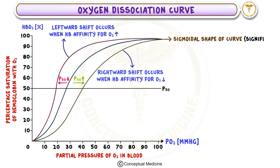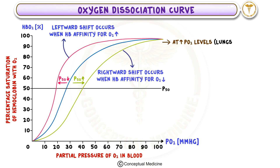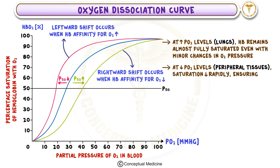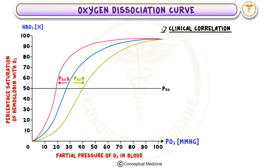The sigmoidal shape of the curve is particularly significant because it allows for efficient oxygen delivery. At high PO2 levels, like in the lungs, hemoglobin remains almost fully saturated even with minor changes in oxygen pressure. However, as PO2 drops to lower levels, like in peripheral tissues, the saturation decreases rapidly, ensuring a large amount of oxygen is unloaded where it's needed most.